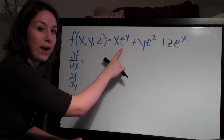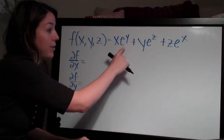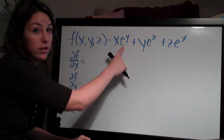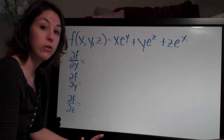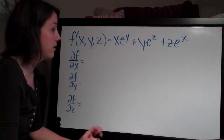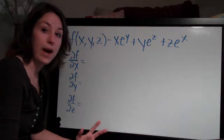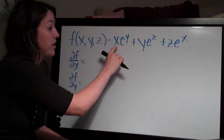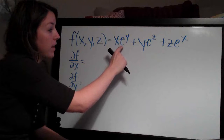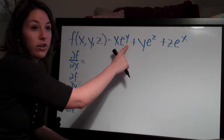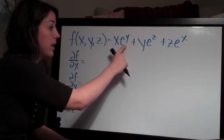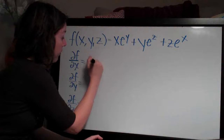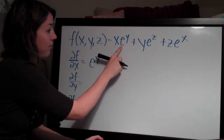If you plug e to the 1 into your calculator, it's something like 2.7 — e is a constant, so e to the y is also a constant, which means it actually looks like a coefficient, like 2x or 12x where 2 or 12 is a constant. The derivative of 2x is 2. This is the same thing: e to the y is like that constant. So when you take the derivative of x e to the y, it's just like 2x becoming 2 — x e to the y just becomes e to the y. That's all that's going to be left.